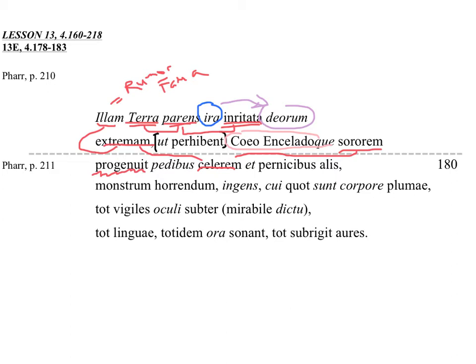And she is swift in feet, that's ablative, with her feet. And with her swift wings, alis pernicibus. And then this is in apposition to Fama: a horrendous monster, or portent, ingens, huge. These are all describing Fama in nominative form.